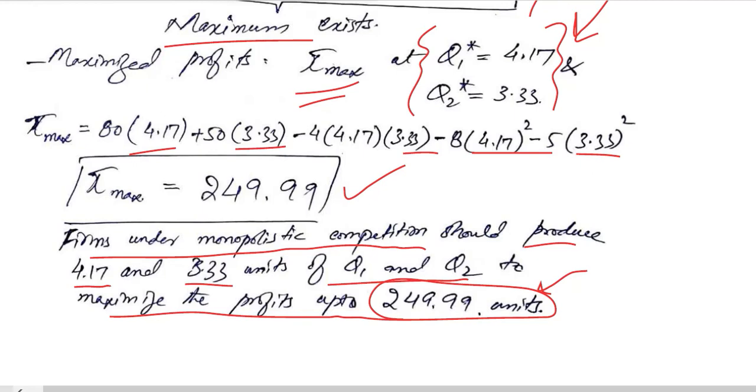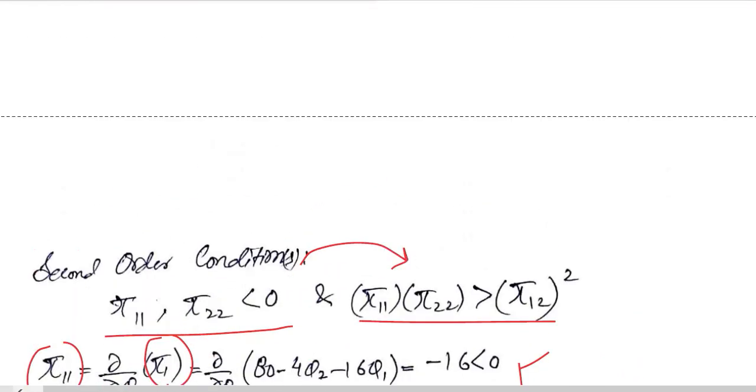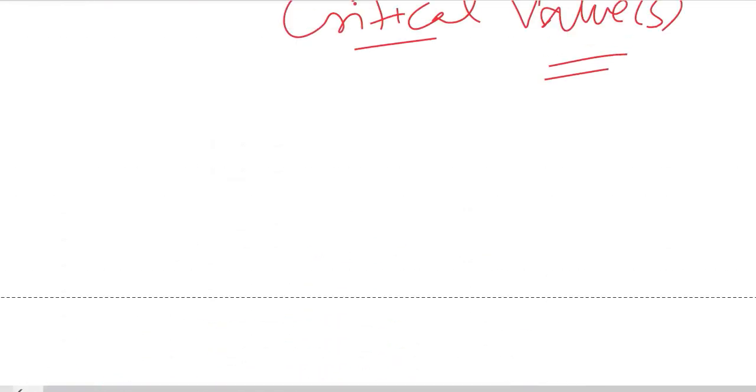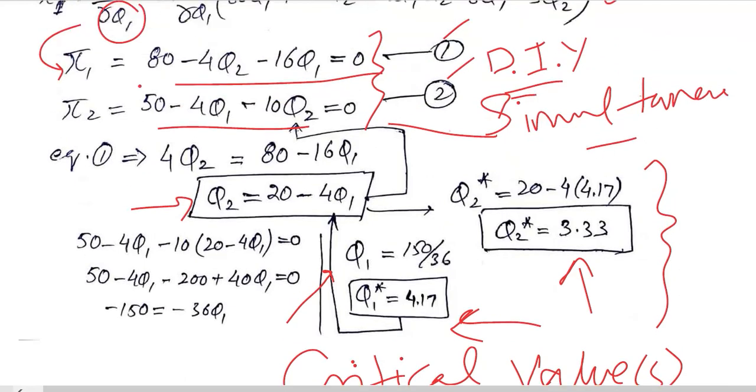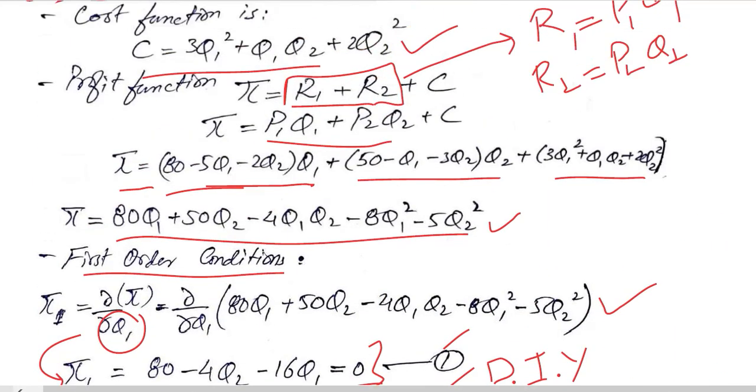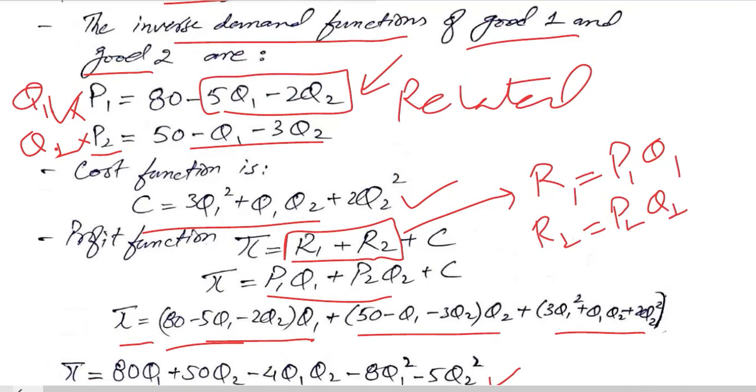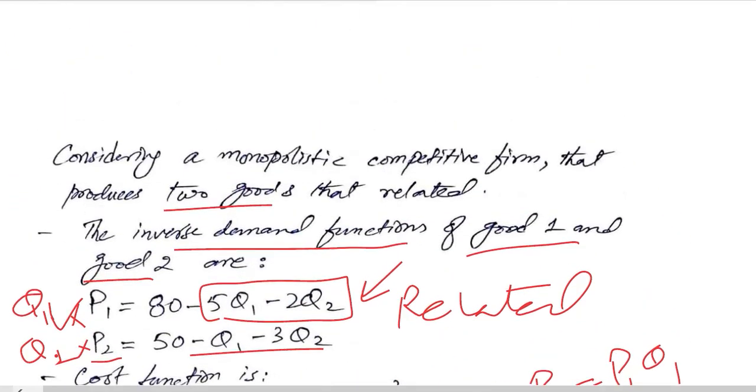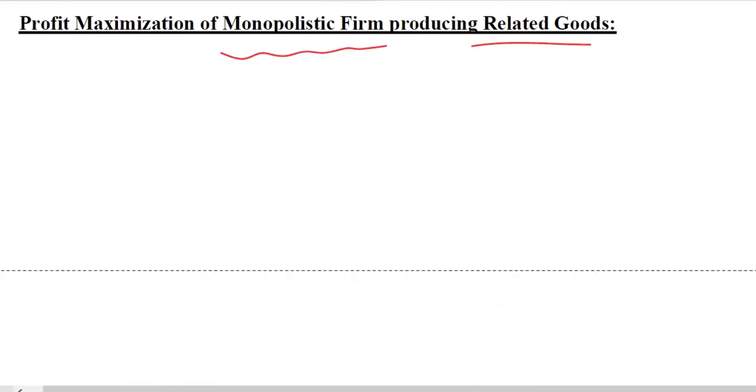So in this way, for the monopolistic firm, we are able to find out the critical values—that is, the levels of output that would maximize the profit of the monopolistic firm that is producing related goods. And it was done by using the second order condition. Thank you.